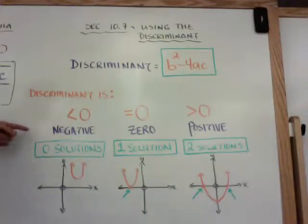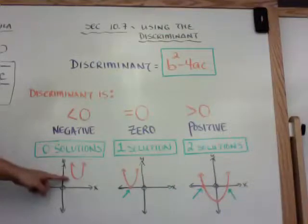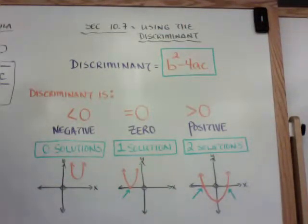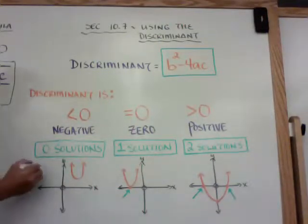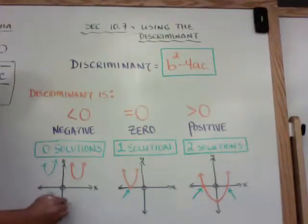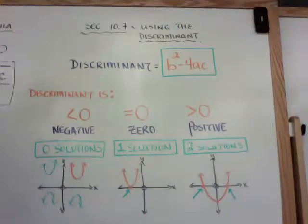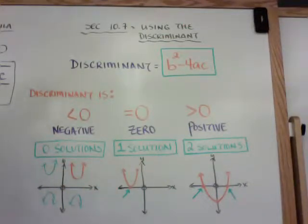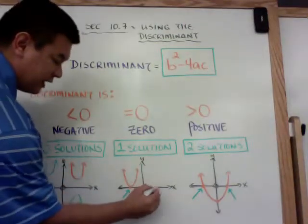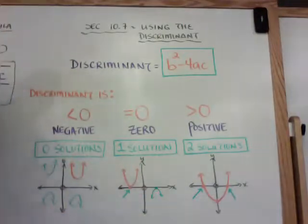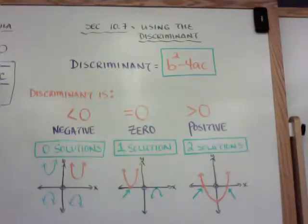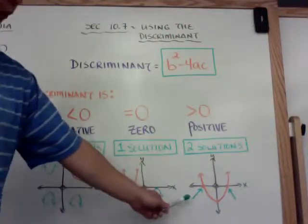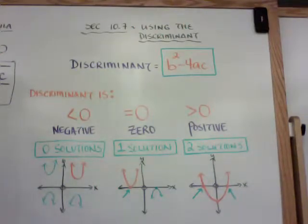Graphically it looks like this: if your discriminant is negative, you have no solutions — the parabola never touches the x-axis. Remember, solutions are your x-intercepts. It could open upward or downward, as long as it doesn't touch the x-axis. If your discriminant is zero, you have one solution — only the vertex touches the x-axis, whether the parabola opens up or down. If your discriminant is positive, you have two solutions — the parabola crosses the x-axis at two points, marked here with the green arrows.